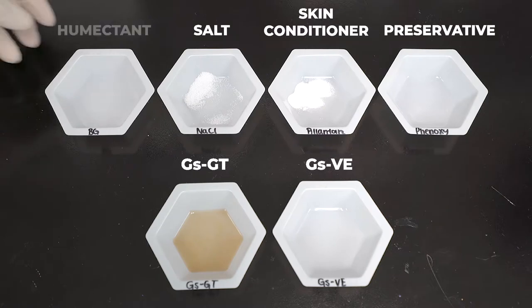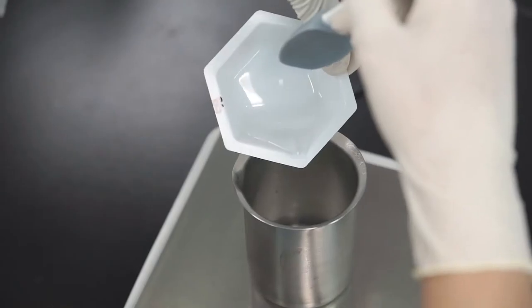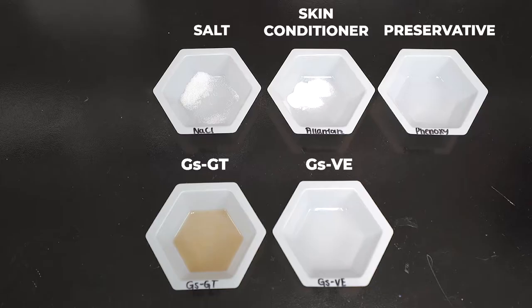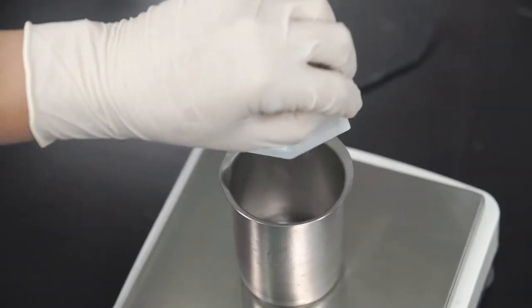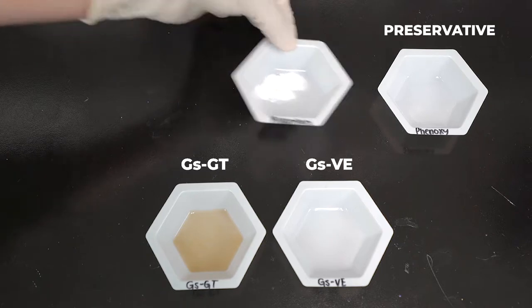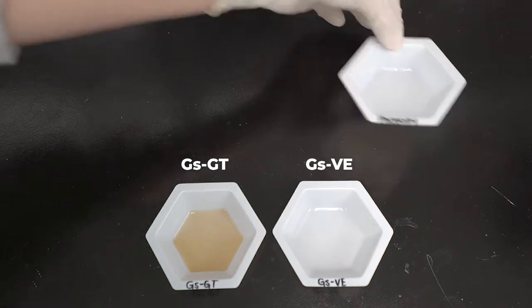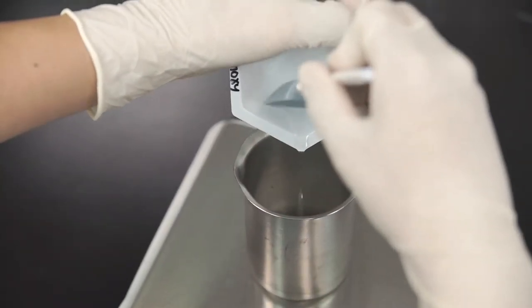The humectant will moisturize the skin and contribute to freeze-thaw stability. Next we add in sodium chloride which further stabilizes the emulsion by reducing the electrostatic repulsion between lipid particles. Now we add a skin conditioning agent and a preservative.